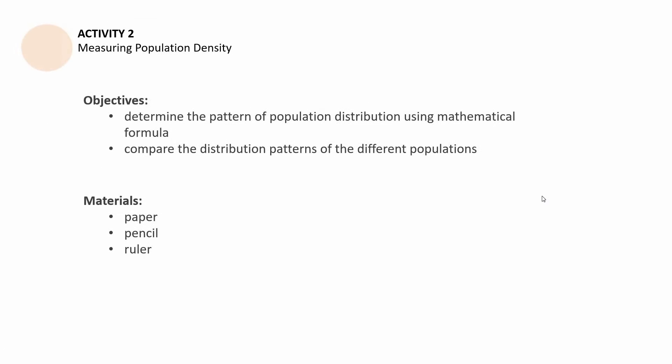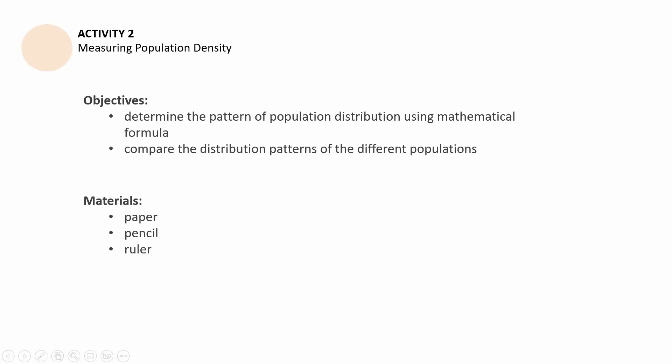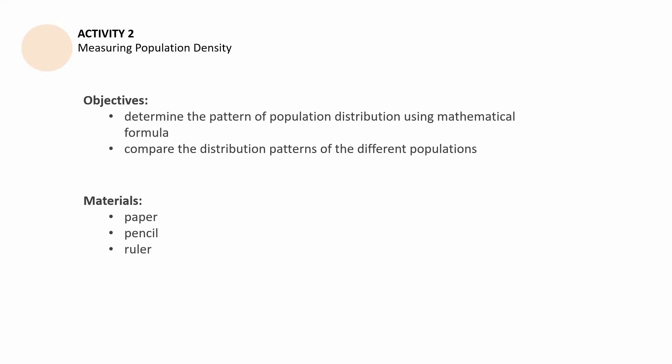So activity number two, measuring population density, has the following objectives. The first one is for the students to be able to determine the pattern of population distribution using mathematical formulae. And then the second one is to compare the distribution patterns of different populations. The materials the students used are paper, pencil, and ruler. But in my classroom activity, I had them report it. So they also needed markers, coloring materials, as well as manila paper.